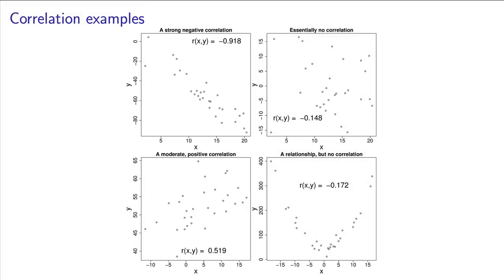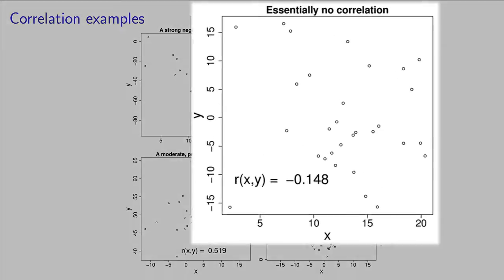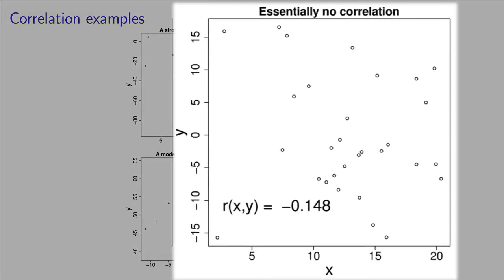Here's another example of two variables, x and y, that have essentially no relationship with each other. Their correlation value here is minus 0.15.